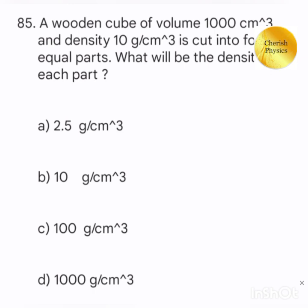A wooden cube of volume 1000 centimeter cube and density 10 gram per centimeter cube is cut into four equal parts. What will be the density of each part?